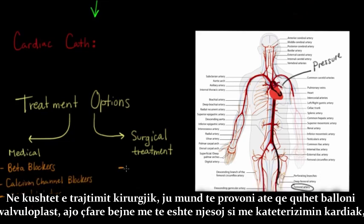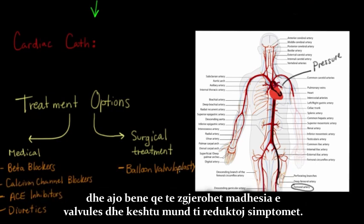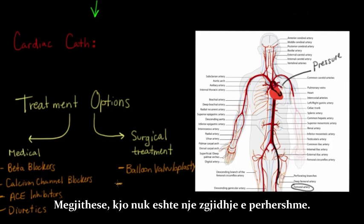For surgical treatment, one option is a balloon valvuloplasty. Similar to a cardiac catheterization, a catheter is passed through a major artery and advanced across the affected valve — for instance, the aortic valve. A balloon on the catheter is then inflated, which increases the opening size of the valve and can reduce symptoms, although this is not as permanent a solution.